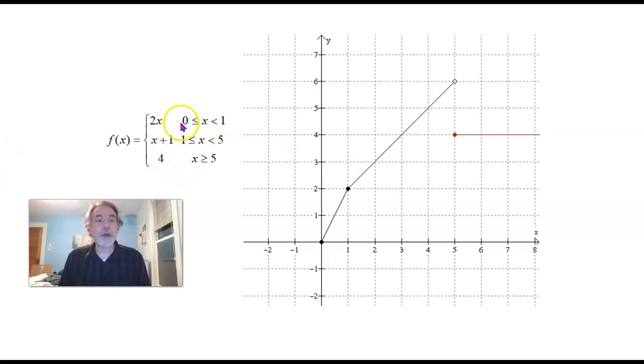If I ask what's f of 0? 2 times 0, which is 0, and you can see that on the graph. Here's where X is 0 and Y is 0. If X is 1 half, that's between 0 and 1, so we do 2 times 1 half and get 1. So here's the point on the graph where X is 1 half and Y is 1.